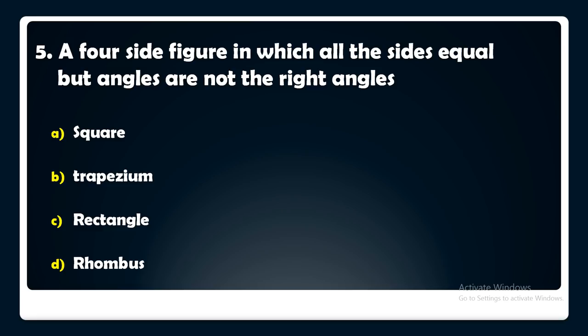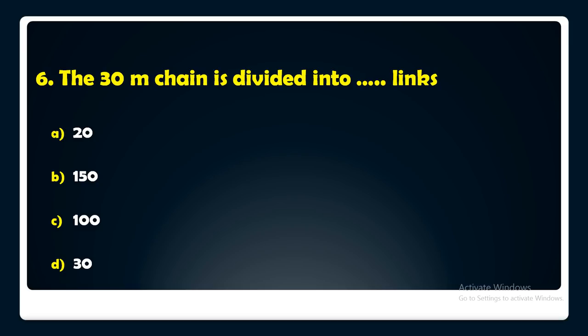The 30-meter chain is divided into how many links — 20, 150, 100, or 30? The answer is: the 30-meter chain is divided into 150 links.